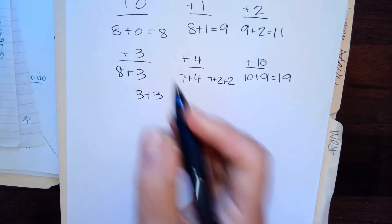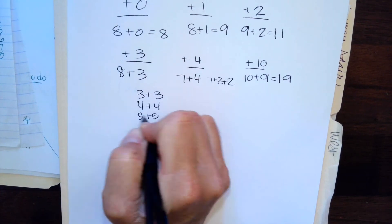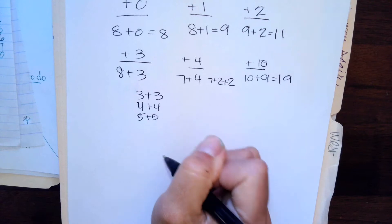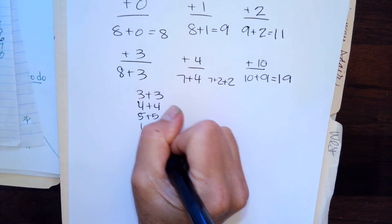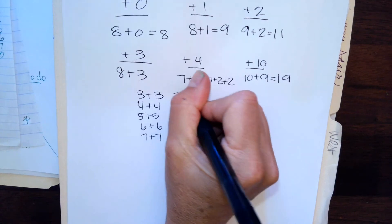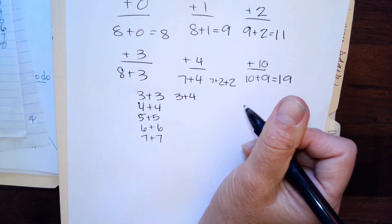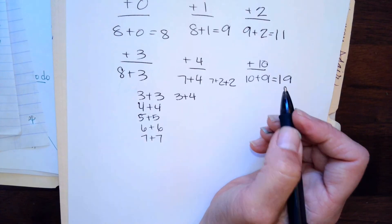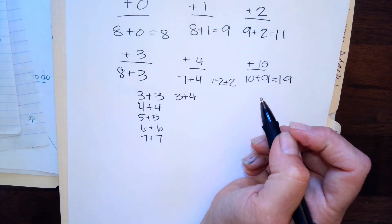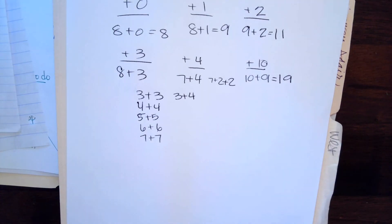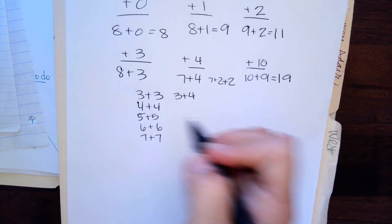Do you know what three plus three is? Three plus three is six. So three plus four is one more than six. What is one more than six? One more than six is seven. You got it.